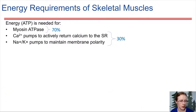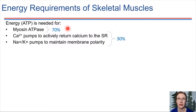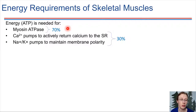About 70% of the energy requirements for skeletal muscles goes to just myosin doing what it does — myosin binding to actin and then undergoing that power stroke that uses ATP every time it happens.